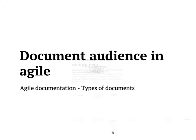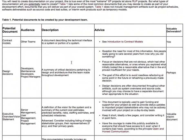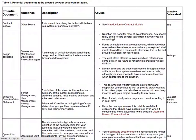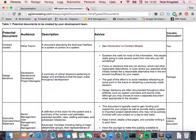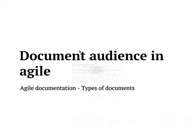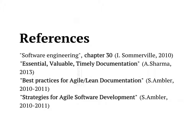Document audience in Agile. You can look at the type of documents that you may produce in Agile - contract models, design decisions - and see who the audience is. The link is provided in the slides on Confluence. Any questions on documentation?